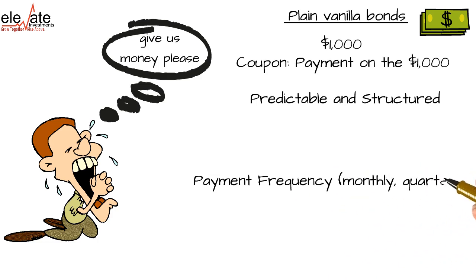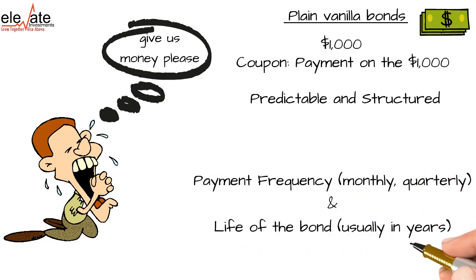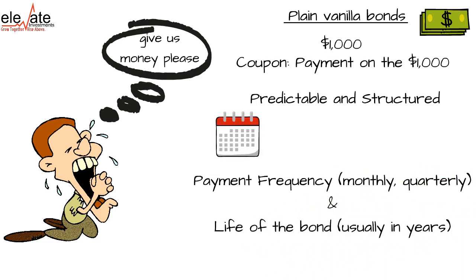Bonds tell you how often they're going to make payments — this is called the payment frequency — and they tell you how long the bond will last, whether one year, three years, five years, and so on. Payment frequency tells you how many times they'll pay you over a single year. If a bond is annual, they pay you once a year; if semi-annual, twice a year; if quarterly, four times a year, and so forth.